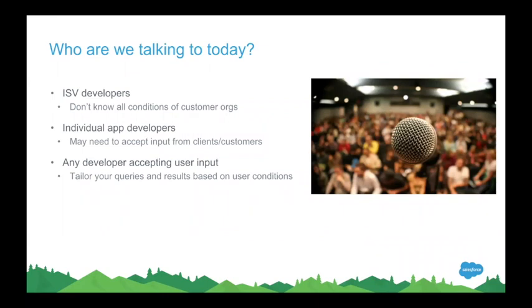Even if you do have a specific org, you may not always know what the input's going to be. You could have a customer-facing application where a customer could be putting in some sort of string of data and you don't necessarily know exactly what it's going to be. So you need to have your code generic enough that it can interpret it accordingly. Maybe depending on who it is or what they're inputting, you may need to create an account or just a contact. Being able to do both simultaneously without having to duplicate your code is very beneficial.